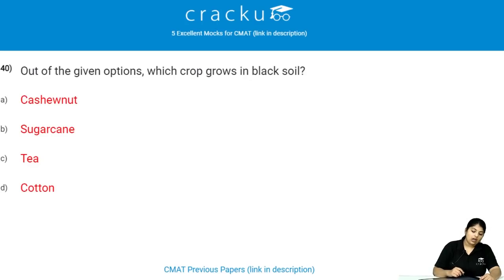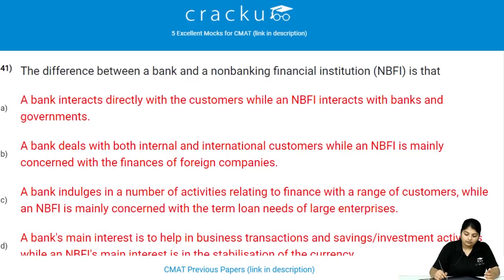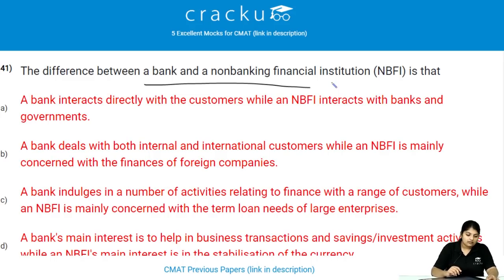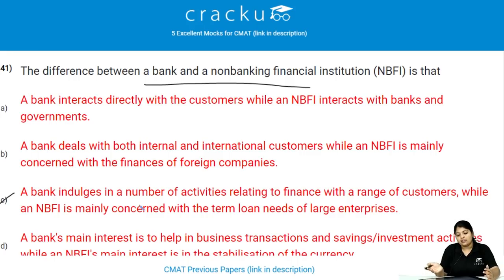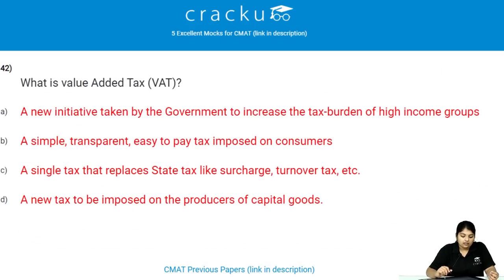Out of the given options, which crop grows in black soil? Cotton grows abundantly in black soil. The difference between a bank and a non-banking financial institution (NBFI) is that a bank indulges in a number of activities relating to finance with a range of customers, while an NBFI is mainly concerned with the term loan needs of large enterprises. Value Added Tax (VAT) is a single tax that replaces state taxes like surcharge, turnover tax, etc.